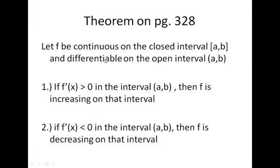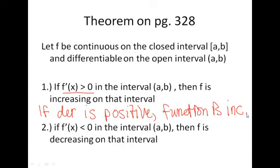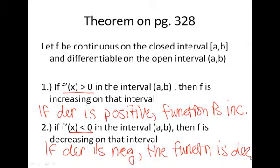This is going to lead us to the main topic of this chapter. The theorem on page 328 states this: if the derivative is greater than 0 — so if the derivative is positive — what we observed was that the function was increasing. And on the contrary, if our derivative is less than 0 — if the derivative is negative — that's just another way of looking at what those definitions told us in our book.